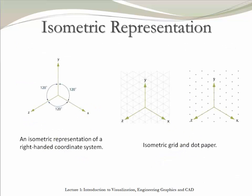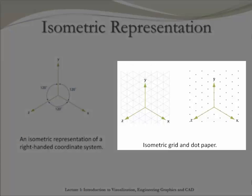An isometric view is a three-dimensional representation of an object. The main characteristic of this view is that each plane has the same scale — iso means same, metric means size. The angle between each axis is always 120 degrees. This is the grid and this is the dot representation for an isometric view.